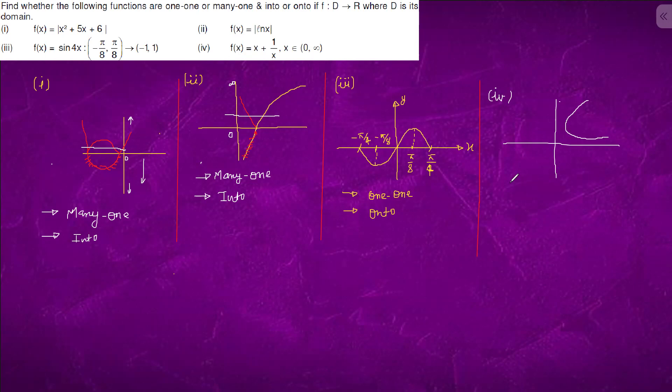So if we differentiate f dash x, it will be 1 minus 1 by x squared. So x is plus minus 1. So we want to validate a little bit. So x zero it will be infinity. So it is somewhere like this.